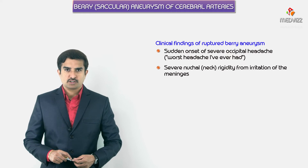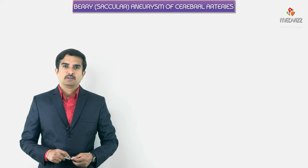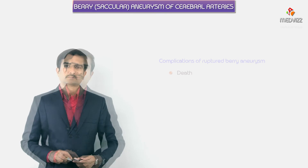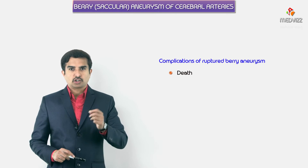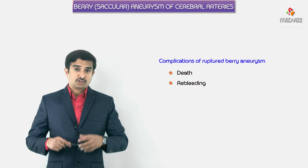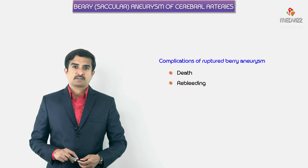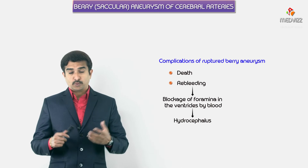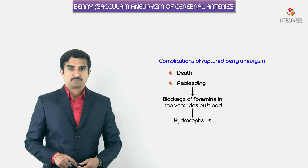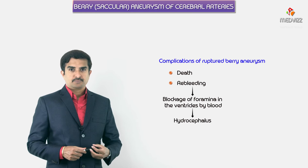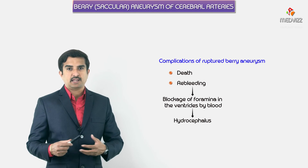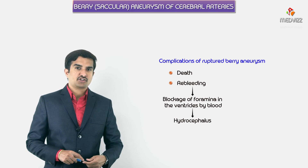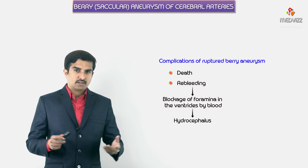Complications of a ruptured berry aneurysm include death, which may occur shortly after the bleed. Re-bleeding can produce hydrocephalus from blockage of the foramina of the ventricles by blood. Whenever the foramina are blocked, cerebrospinal fluid cannot escape from one ventricle to the other, leading to accumulation of CSF and hydrocephalus.